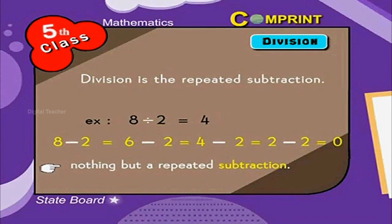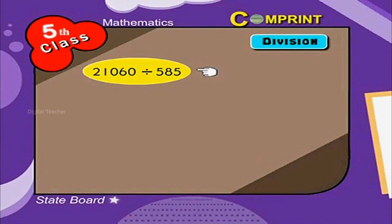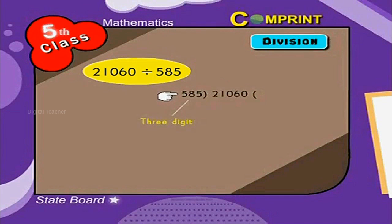Now let us divide a 5 digit number by a 3 digit number: 21,060 divided by 585. The divisor consists of 3 digits, so we can take 4 digits at once.